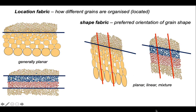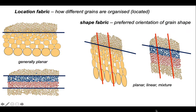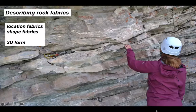So we have a systematic framework now for describing the fabrics we find in outcrop that do not require us to jump straight away to a genetic set of terms. Location fabric and shape fabric are entirely descriptive — a good way to start. Location fabric defines how different grains are organised in the rock, defined by grain size variations or grain type variations. Shape fabric is simply defined by the preferred orientation of the long axes of grains in the rock. Deformed rocks commonly contain both a shape fabric and a location fabric, and it's the application of these terms and approaches that allows a geologist to embark on unravelling the structural history of outcrops like this one in the Alps.